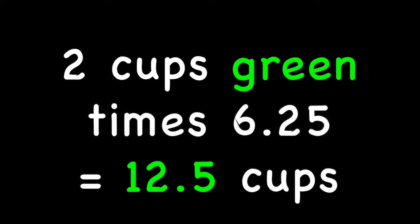In the first batch, the painter had 2 cups of green paint. To make 100 cups, multiply 2 cups by 6.25, giving 12.5 cups of green paint. The painter also started with 8 cups of white paint. Multiplying 8 cups by 6.25 gives 50 cups of white paint needed for the 100-cup batch.